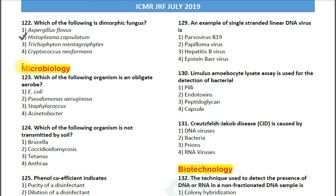Next questions are from the subject Microbiology. Question number 123: Which of the following organisms is an obligate aerobe? Options: 1. E. coli; 2. Pseudomonas aeruginosa; 3. Staphylococcus; 4. Acinetobacter. The correct answer is option 2 — Pseudomonas aeruginosa. Obligate aerobes are those organisms which survive only in the presence of oxygen.